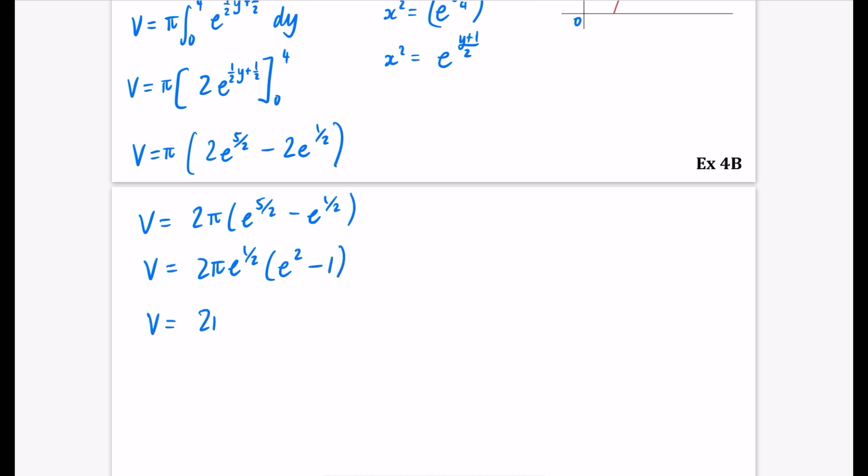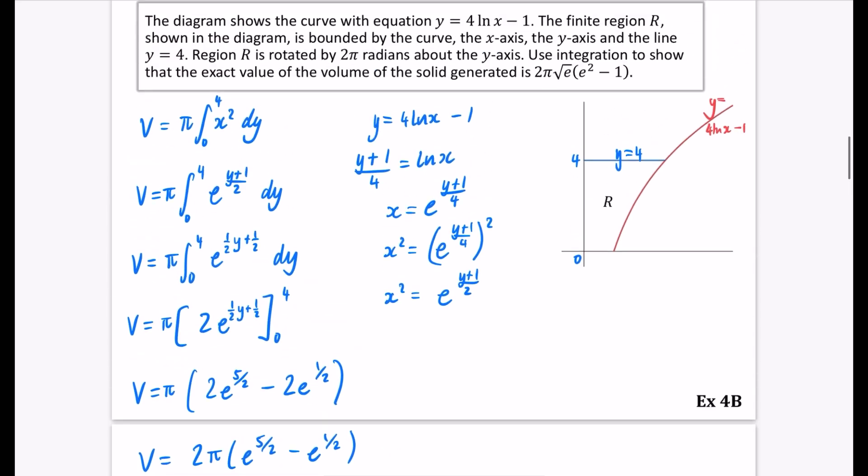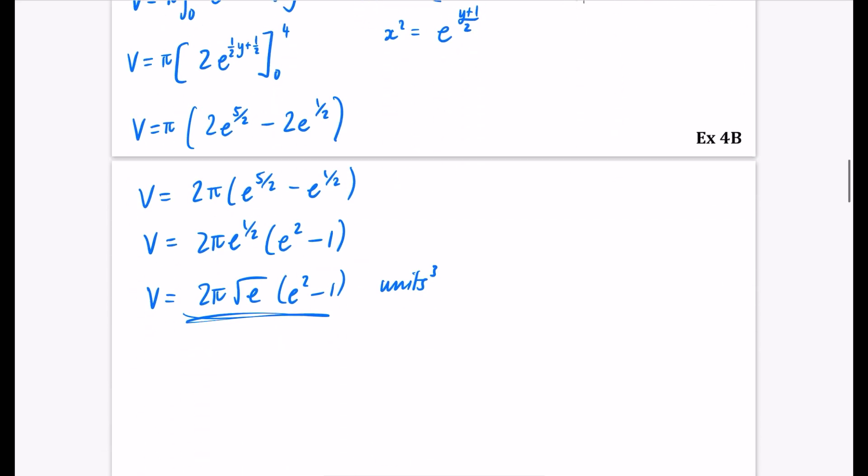All that's left is to write it in the form that they wanted, which was the square root of e, e squared minus 1. And again, this means that the units we've got there have been cubed. So it's 2 pi root e, e squared minus 1.